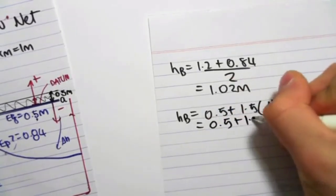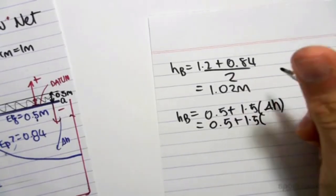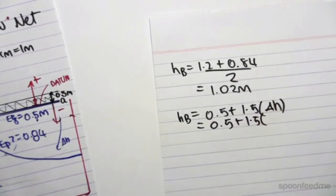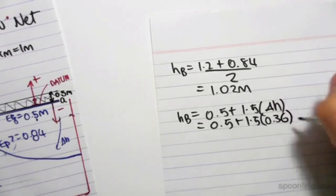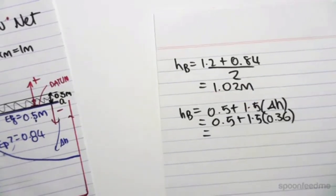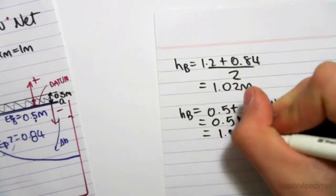From the previous video, we know change in H was 0.36. Let me just double check it. Change in H was 0.36. So this would be 0.5 plus 1.5 times 0.36, which gives us 1.02 meters.